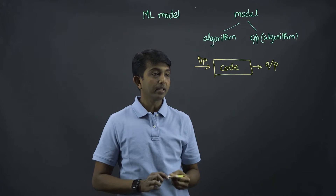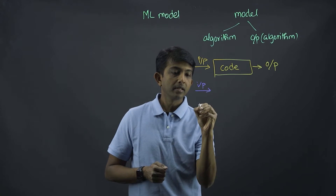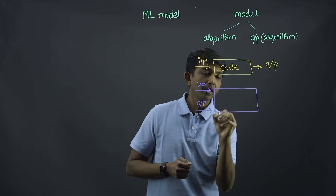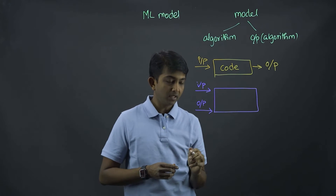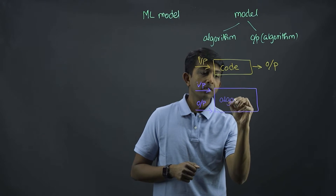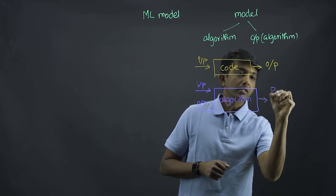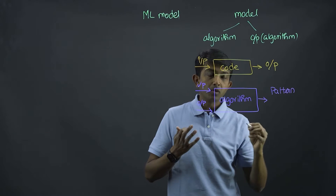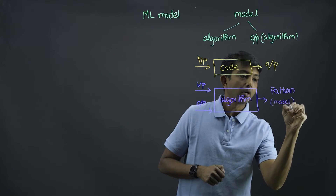But with machine learning, what we have is the input and then the output. Now you're trying to find out what is the pattern that could give the output given the input. To find that out, we basically use an algorithm that produces the pattern. This is not just any algorithm but more like statistical algorithms, and this pattern that's produced is also called the model.